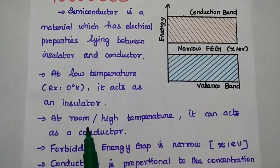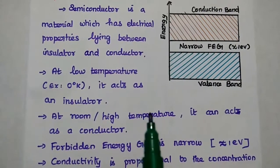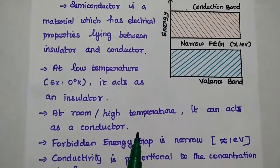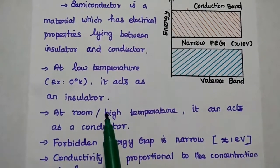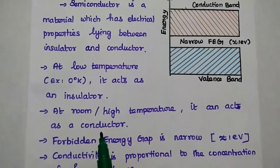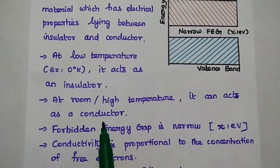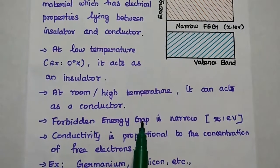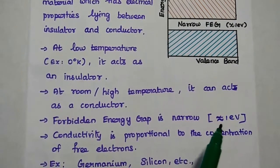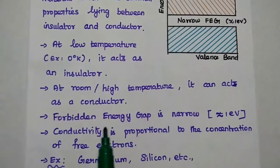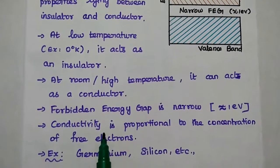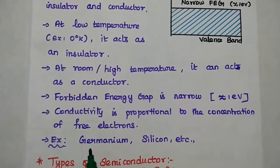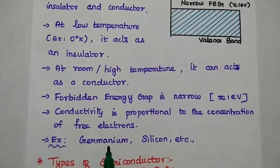At room temperature or high temperature, the same semiconductor can act as a conductor. So based on the temperature, it can act as either an insulator or a conductor. That is why it is called a semiconductor. The forbidden energy gap is narrower, approximately 1 electron volt.